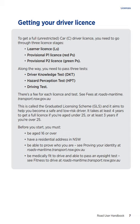To get a full unrestricted car driver licence, you need to go through three licence stages: learner licence, provisional P1 licence, and provisional P2 licence. Along the way, you need to pass three tests: driver knowledge test, hazard perception test, and driving test. There's a fee for each licence and test. This is called the Graduated Licensing Scheme, and it aims to help you become a safe and low-risk driver. It takes at least four years to get a full licence if you're aged under 25, or at least three years if you're over 25.